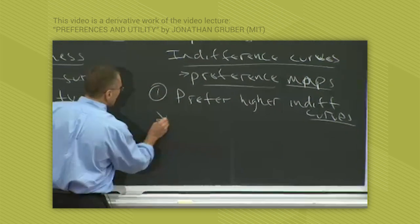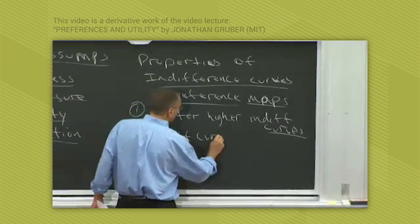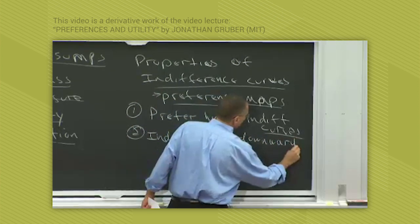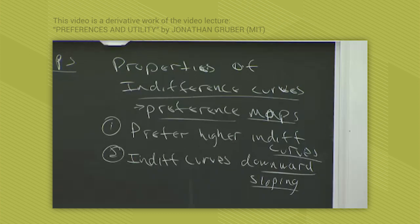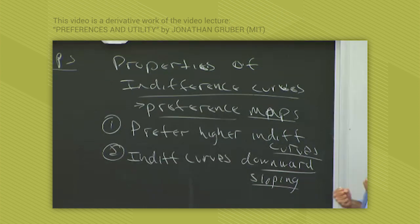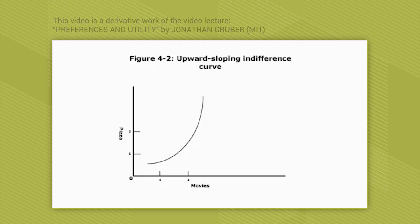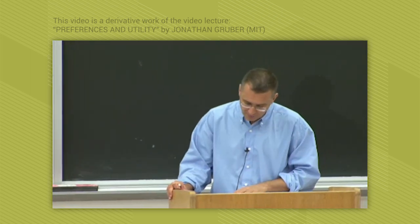The second property is that indifference curves are always downward sloping. That, once again, comes from non-satiation. To see this, look at the next figure showing an upward sloping indifference curve. Why does an upward sloping indifference curve violate non-satiation? Because you're indifferent to getting more. This would say you're indifferent between getting one pizza and one movie, or two pizzas and two movies. You can't be, because that violates more is better. So indifference curves can't be upward sloping—they've got to be downward sloping by the non-satiation assumption.